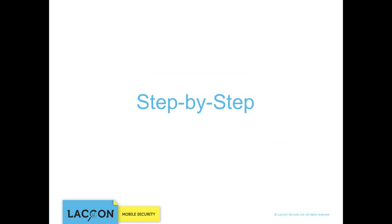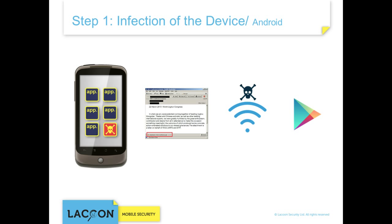Let's look behind the scenes of the attack. The first step requires the infection of the device. In Android, the malicious software is downloaded remotely. Common methods include tricking the user to download an app from the market or from a third-party application market. Remote infection can also be performed through a man-in-the-middle attack, where an active adversary intercepts the user's mobile communications to inject the malware.